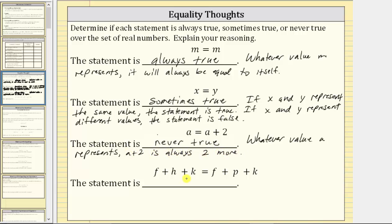Finally, we have the equation f plus h plus k equals f plus p plus k. We know f is equal to f and k is equal to k, which tells us this statement is true when h equals p, but it is false when h doesn't equal p, and therefore the statement is sometimes true.